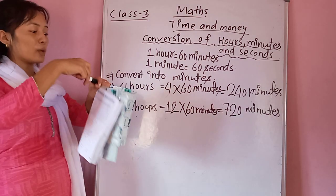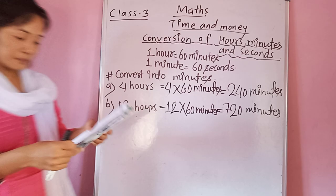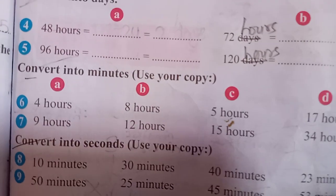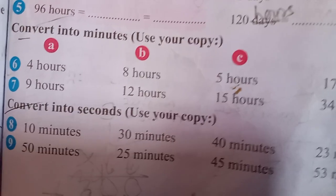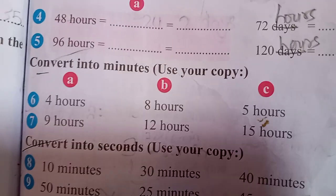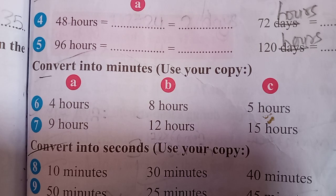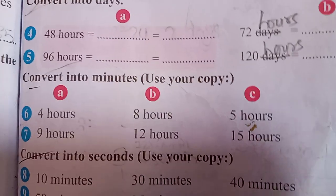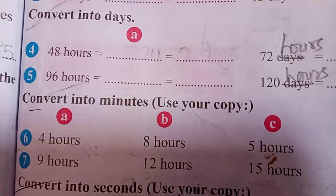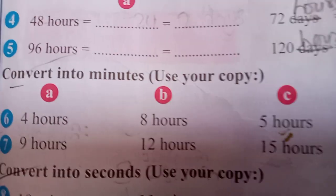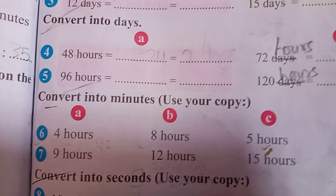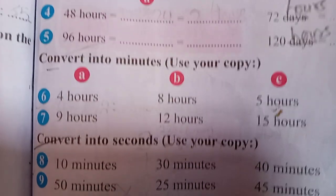Here is a question for you in which you have to convert the given hours into minutes. I have already done 4 hours and 12 hours. The remaining ones you have to do by yourself — just multiply each and every number of hours by 60 and you will easily get the answer. If you follow the same method, you will get the correct answer.